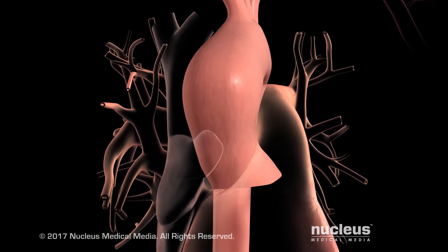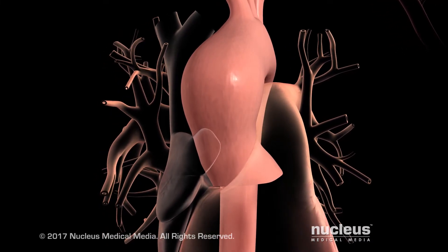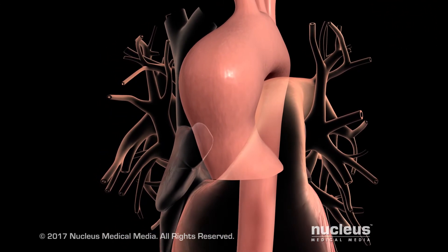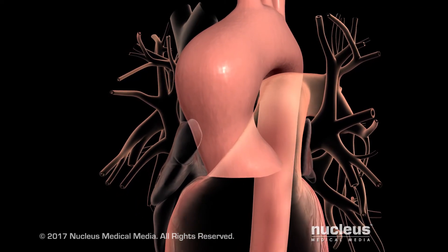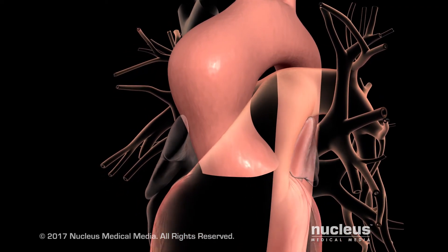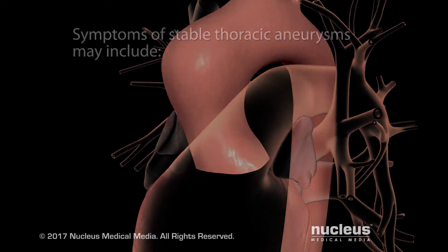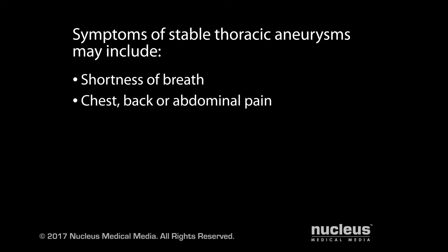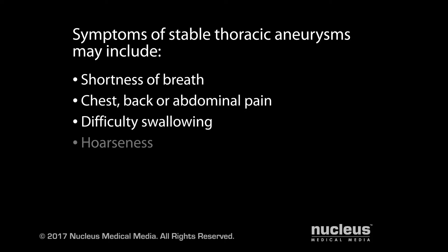Most thoracic aneurysms have no symptoms. However, when they reach larger sizes, various symptoms may appear, depending on the severity and location of the aneurysm. Symptoms of stable thoracic aneurysms may include shortness of breath, chest, back, or abdominal pain, difficulty swallowing, and hoarseness.